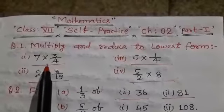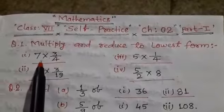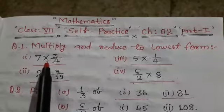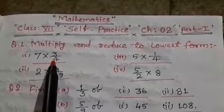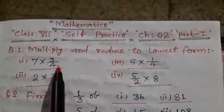Dear students, here some fractions are given. They are in multiplied form. We need to solve it. At first we multiply and after that reduce it to lowest form.